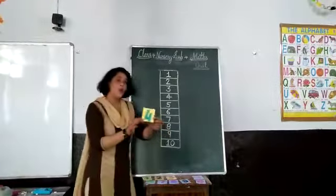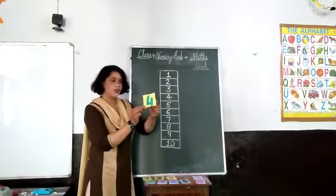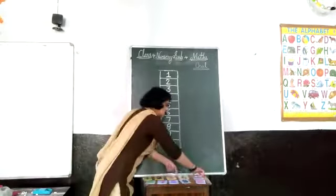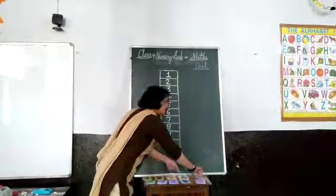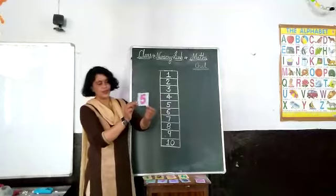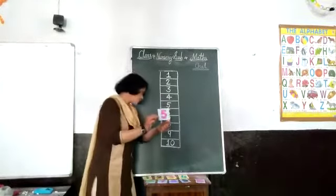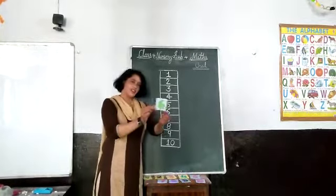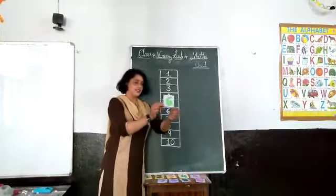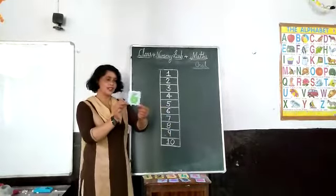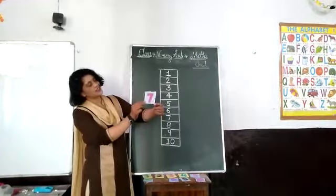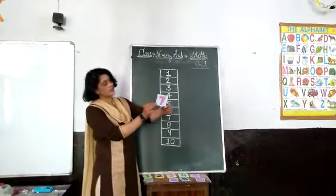This number 4. 4, 4, 4. This number 5. 5, 5, 5. This number 6. 6, 6. This number 7. 7, 7, 7.